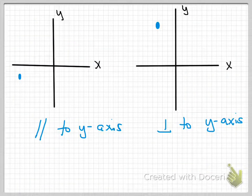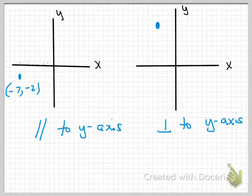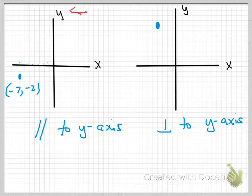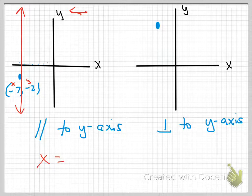Let's do the next one: write an equation of a line parallel to the y-axis going through the point negative seven, negative two. My y-axis is here. A line parallel to it goes straight up and down. I draw my red line through that point. Does it touch the x-axis or the y-axis? My red line touches the x-axis at negative seven. So my equation is x equals negative seven.